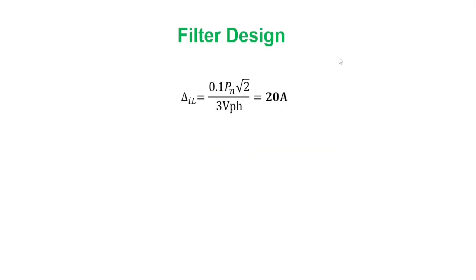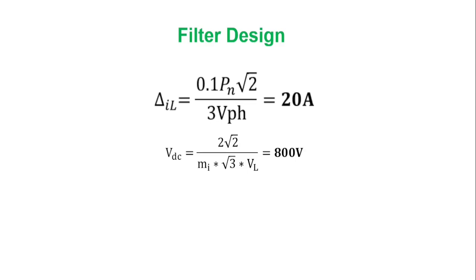In designing our filter, a 10 percent ripple of the rated current has been considered. The VDC has been selected as 800 volts after the calculation gave us 816, so we selected the closest which is 800 volts. The modulation index mi is selected as 0.8, and it shouldn't be above one.